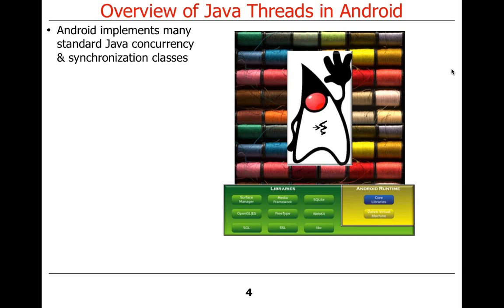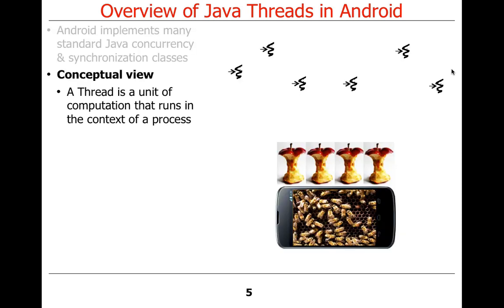A lot of the stuff we get in Android comes straight from Java, so if you know Java threading, Android threading is pretty much the same, although there's more stuff that it does above and beyond what Java does, as we talked about before. So let's talk about two different views: there's a conceptual view and an implementation view.